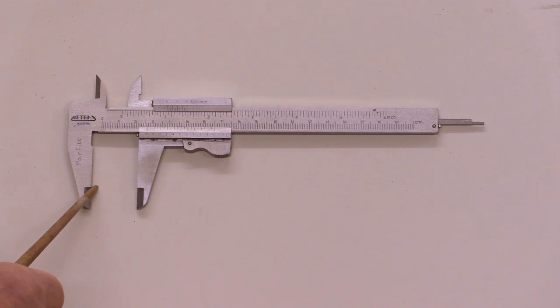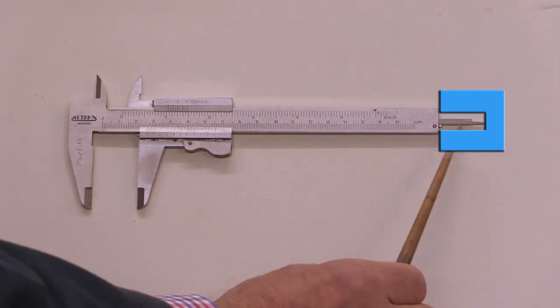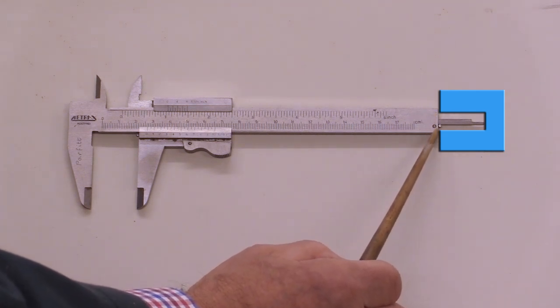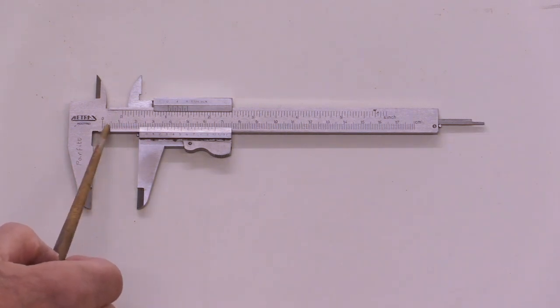These jaws here allow you to measure the external dimensions of something. These jaws here allow you to measure the internal dimensions. At this end there's a depth gauge so you can measure from the very bottom of the calipers to the very point there, and that's reflected in the same reading up here.